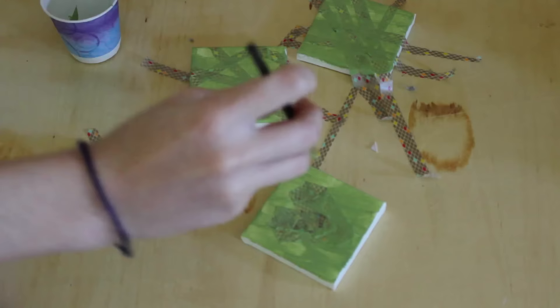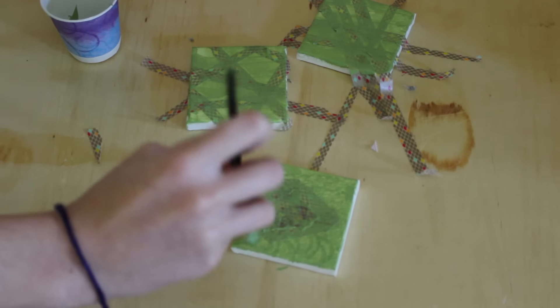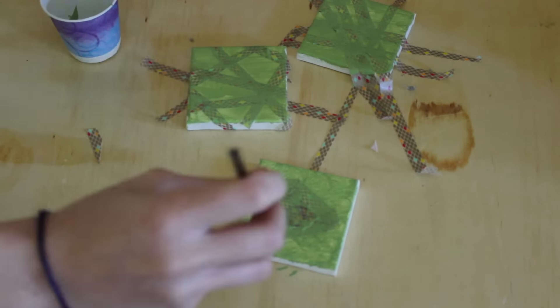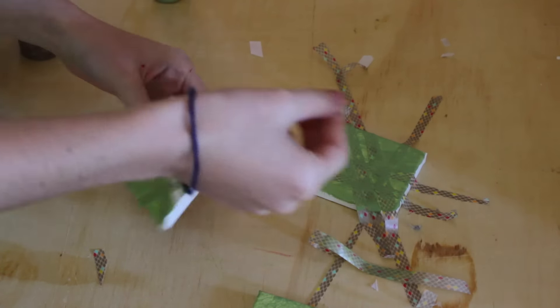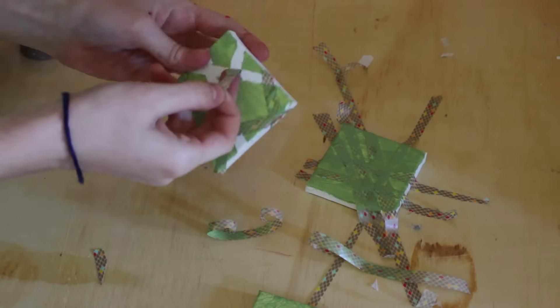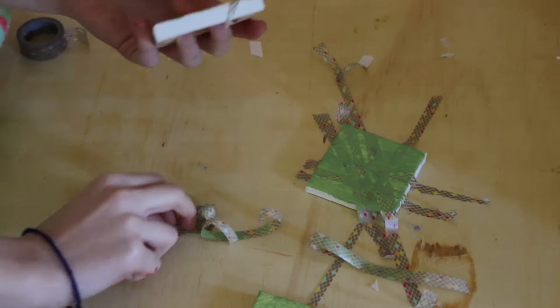When you're done you're just going to peel off the tape and it'll be all done. Hopefully the washi tape will leave clean lines. I didn't press mine down hard enough so the lines weren't totally perfect, but I still think they look super cute.